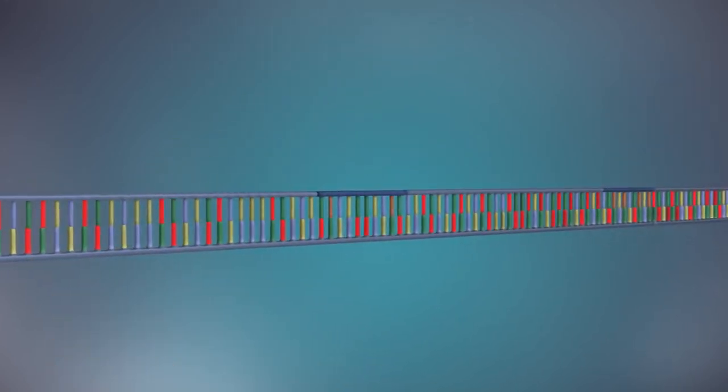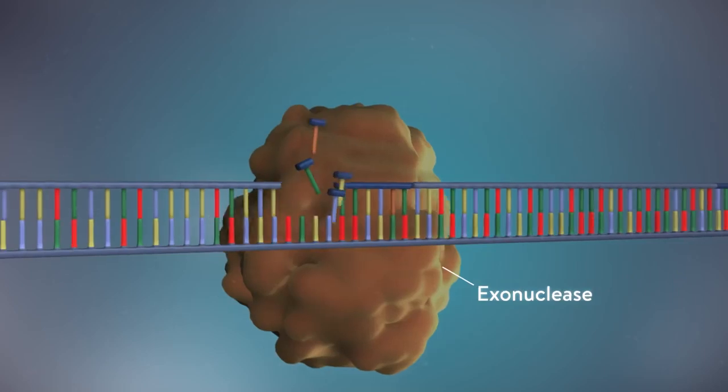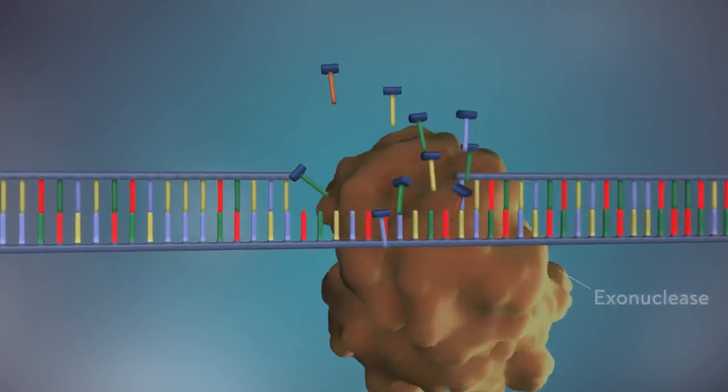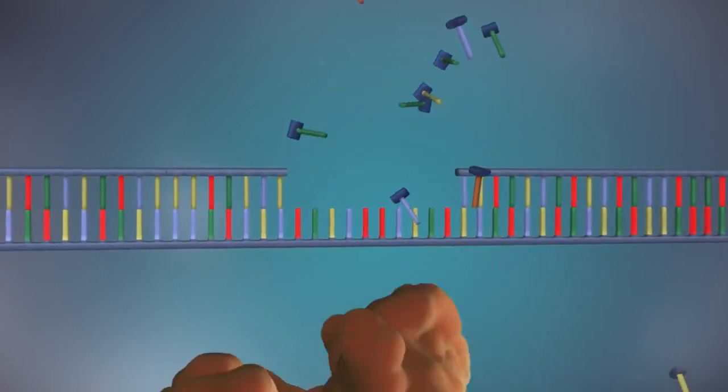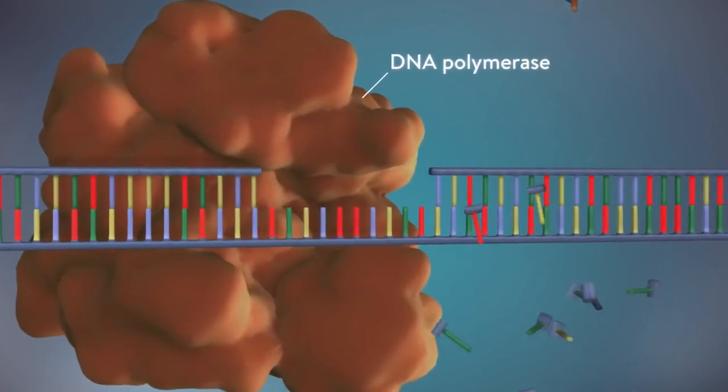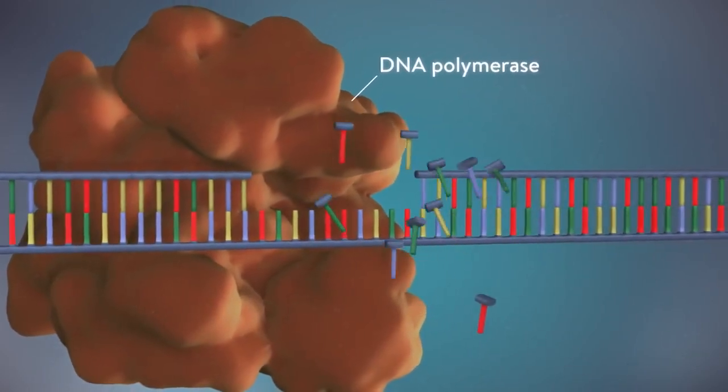Once the new DNA has been made, the enzyme exonuclease removes all the RNA primers from both strands of DNA. Another DNA polymerase enzyme then fills in the gaps that are left behind with DNA.